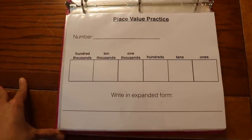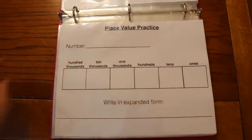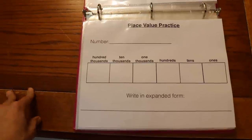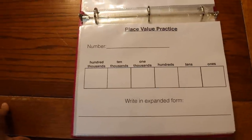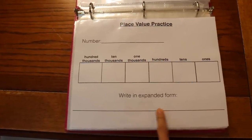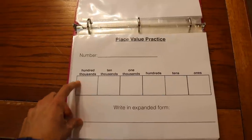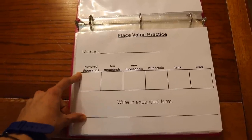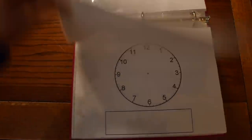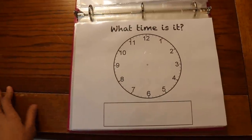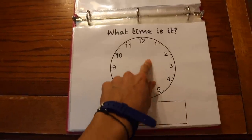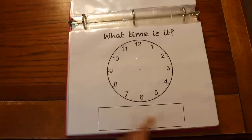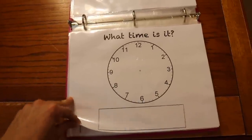Here I have something that I want her to practice every day. We're doing place value practice. So I'll write a number here in the morning with dry erase, then she needs to write down here to break down the number and then write the number in expanded form here. Right now we're practicing up to the hundred thousands. So this is a great little practice sheet for her. We also like practicing time. Sometimes I'll write the time here and have her do it, or I'll put the time here and have her write it here, just to practice our time.